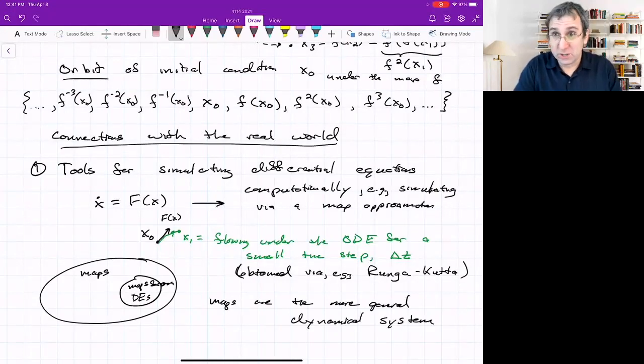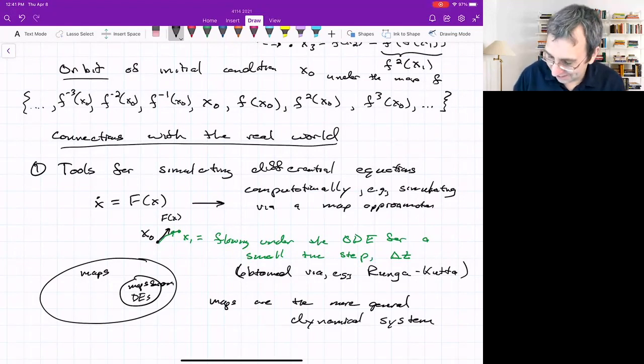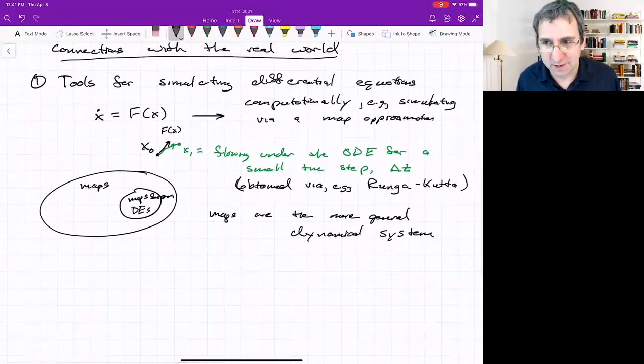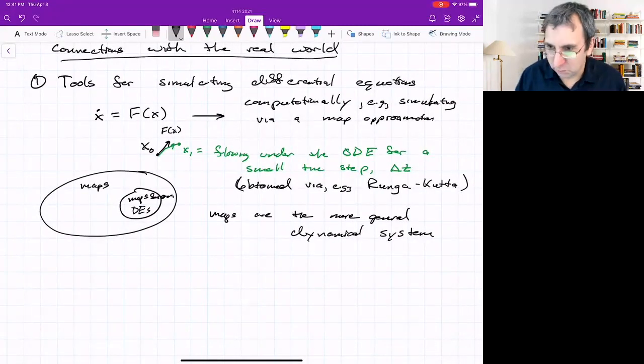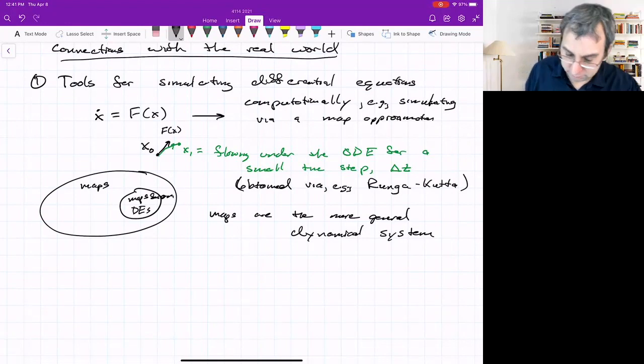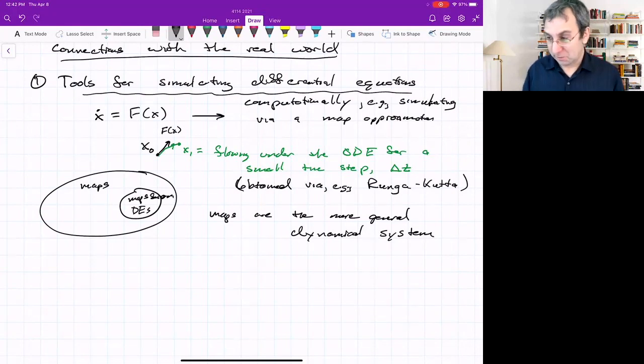The study of differential equations started first. So the study of maps is relatively new, in terms of centuries. The logistic equation was published around the time I was born, and it's been a big deal. So it's not that old. It's 40 something. So yeah, they are the more general. This is one connection. So you could think of, if you're studying a map or the category of maps generally, some subset of that is coming from differential equations.